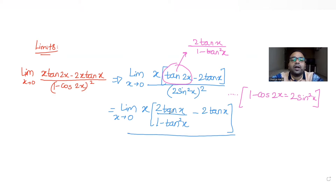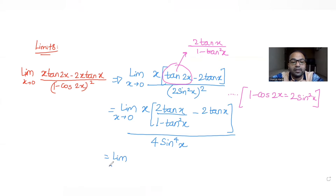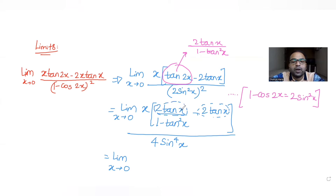The denominator (2·sin²(x))² simplifies to 4·sin⁴(x). Further simplifying, I can see that 2·tan(x) is common in the numerator from both terms, so I take out 2x·tan(x) as a common factor.